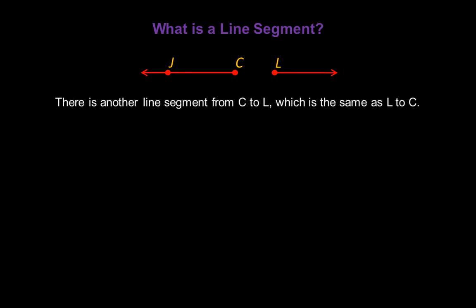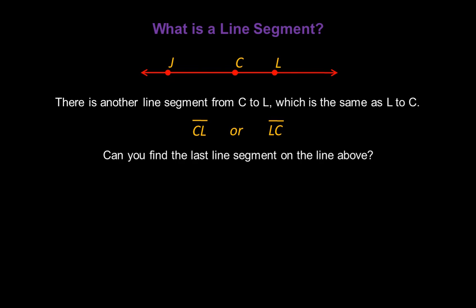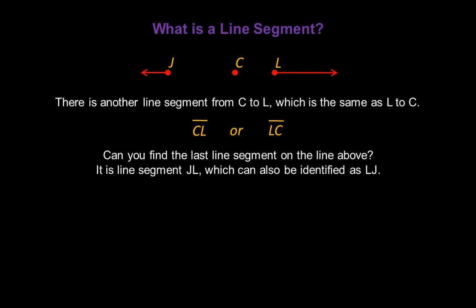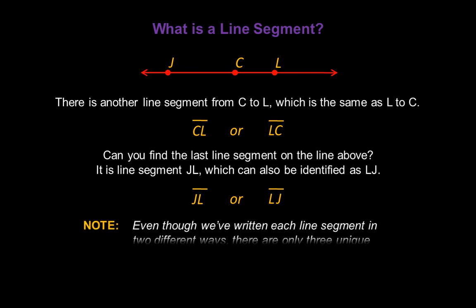Now there's another line segment from C to L, which is the same as L to C. So we can write that as CL with the line segment symbol above it, or swap the letters and write LC with the line segment symbol above that. Can you find the last line segment on the line above? It's line segment JL, which can also be identified as LJ. Please note, even though we've written each of the line segments in two different ways, there are only three unique line segments shown, not six.